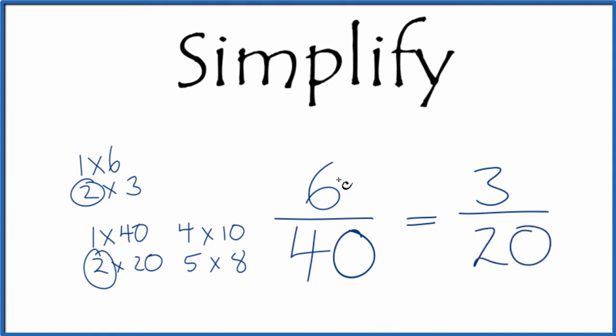We've simplified 6/40 down to 3/20. You can't reduce this any further—it's in simplest terms. These are equivalent fractions. If you divide 6 by 40 and 3 by 20, you'll get the same value.